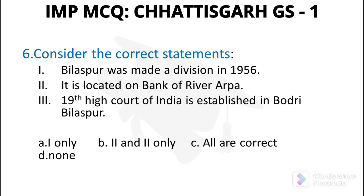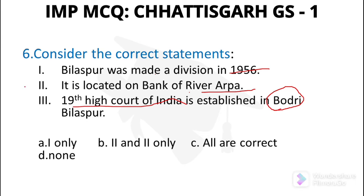Question number 6: Consider the correct statements about Bilaspur. Bilaspur was made a division in 1956. It is located on the bank of Arpa River. The 19th High Court of India is established in Bilaspur. All the options are correct, so option C will be the answer.